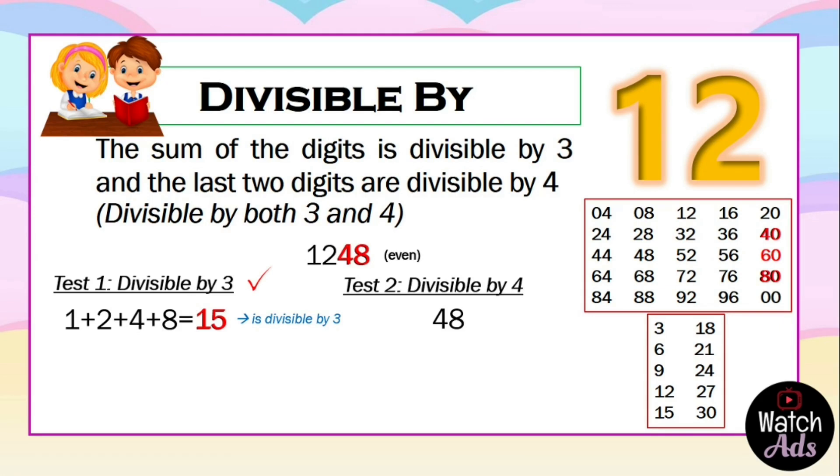How do I say so? Check the magic numbers on the right side. We have 40, we subtract it from 48, the answer is 8, and 8 is divisible by 4. Which means that 1248 is divisible by 12.